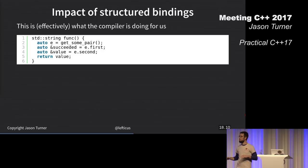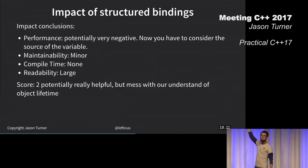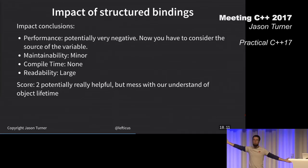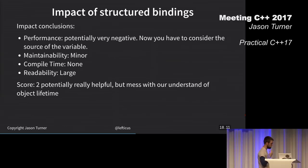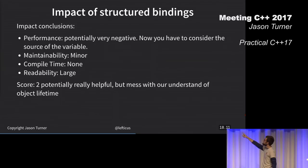Potentially very negative. As far as I know, this is the only case in the language where you have to consider the source of a variable to know what the best thing to do with it is. Potentially very negative impact on performance, minor maintainability impact, readability can be huge. These examples where we know we just want to unpack something, a reference to the things that we have in a ranged for loop, this can be great. But we need to be aware of the lifetime of these things now. I gave it a 2 still. It messes with our understanding of object lifetime.